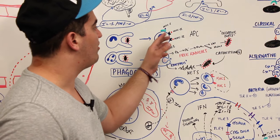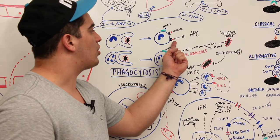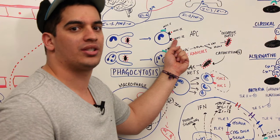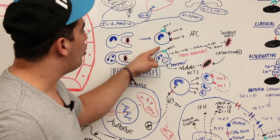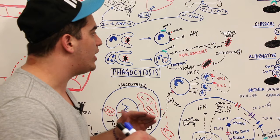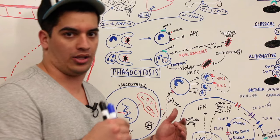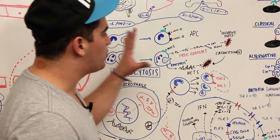The macrophages can phagocytose those bacteria and expose those antigens on the cell membrane with MHC2 molecules, major histocompatibility complex type 2. But remember, all nucleated cells in your entire body express MHC1 molecules. That's important and we'll talk about that when we get to adaptive immunity.